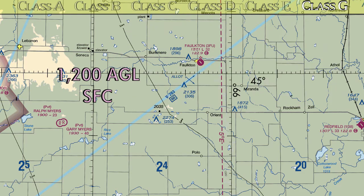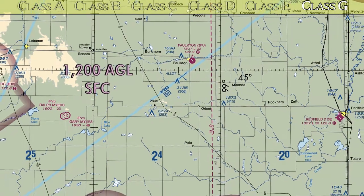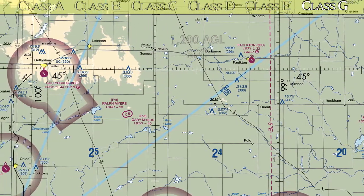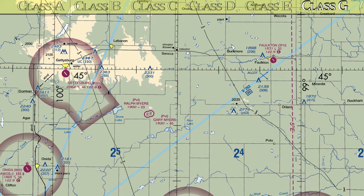So that was class G from the surface up to 1,200 feet AGL. Now zoom out a little and go west to Gettysburg Airport, which is inside what looks like a little keyhole shape. Inside the faded magenta area, class G airspace goes from the surface up to only 700 feet AGL — not as high as the 1,200 feet outside that magenta keyhole.